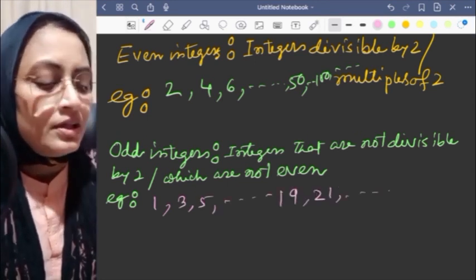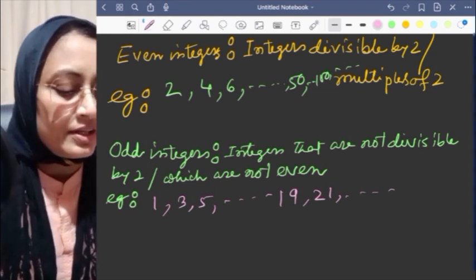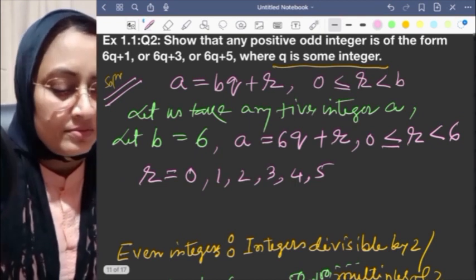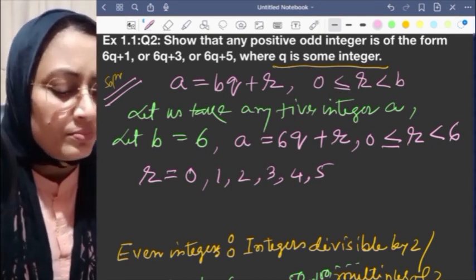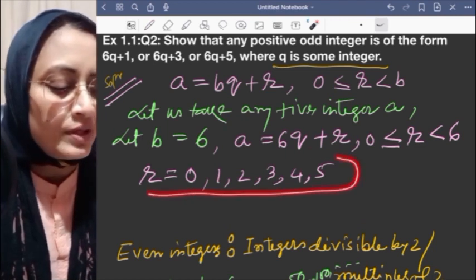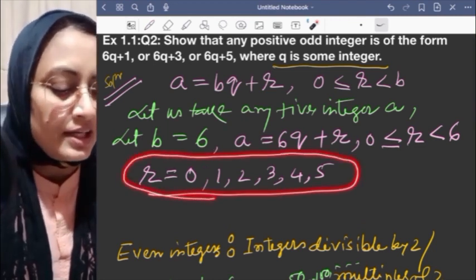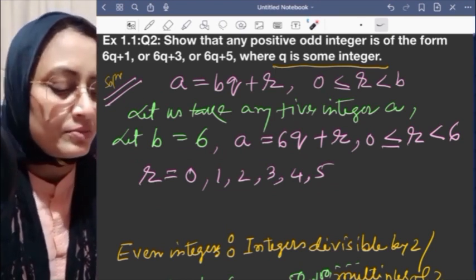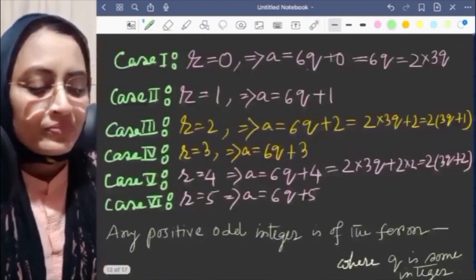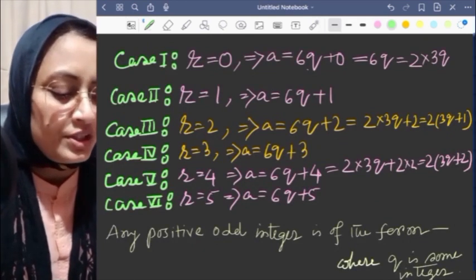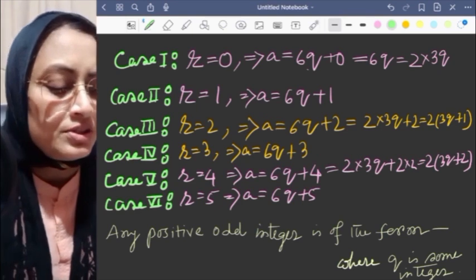Odd integers are simply the integers which are not even, which are not divisible by 2. In simple language, which are not even, those all integers are odd integers. If 2, 4, 6 are even, then 1, 3, 5 which are not even are odd integers.